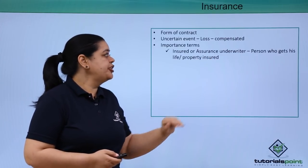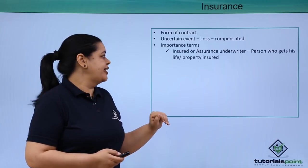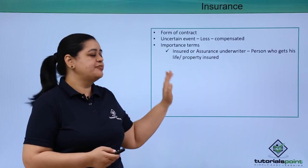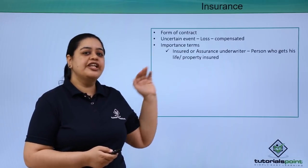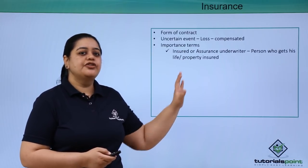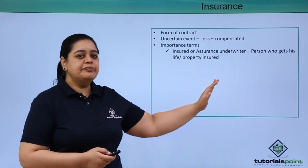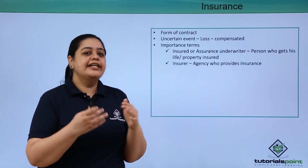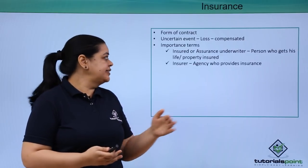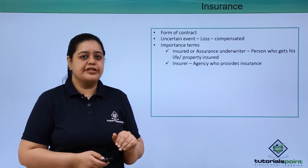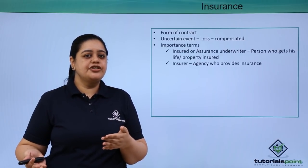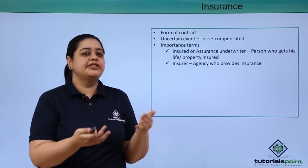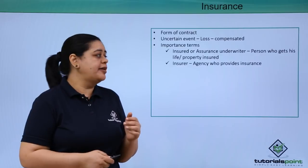The first term is the insured. He is the person who wants to get his property or his life insured — the person who wants the insurance. The insurer is the company or agency providing the insurance. So the company giving the insurance is the insurer, and the insured is the person who has taken the insurance from the company.